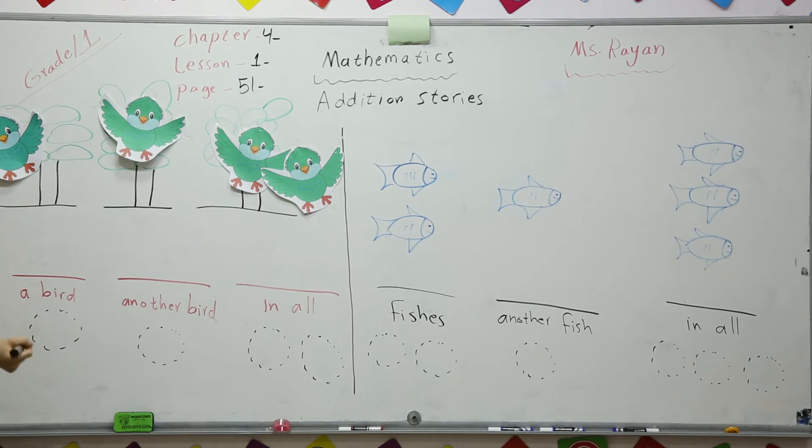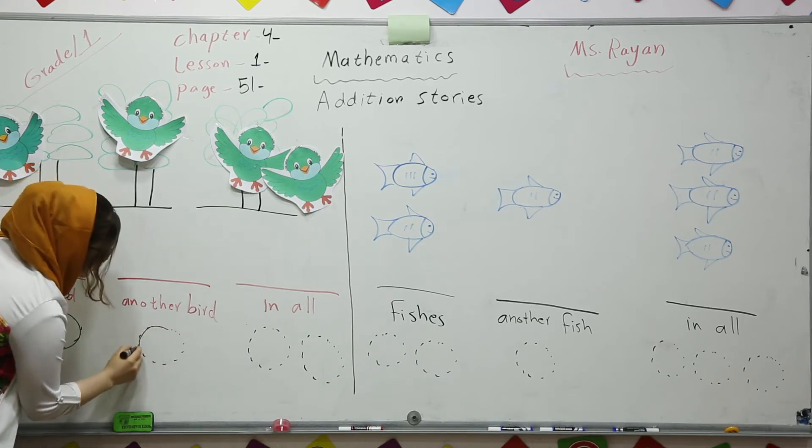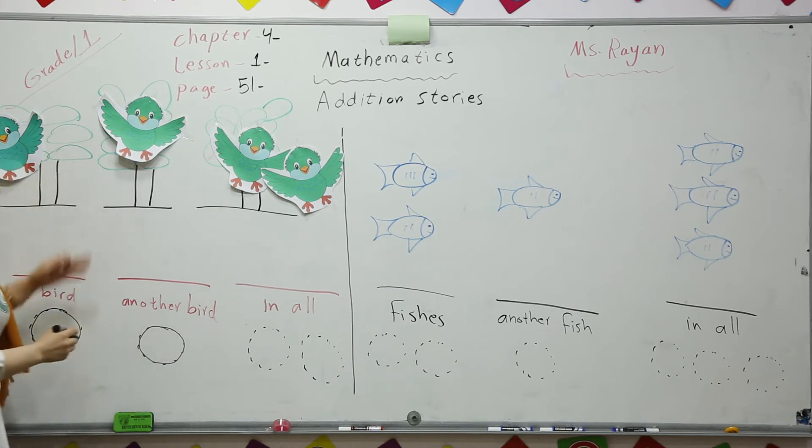So let's make it mathematically. How? This circle is for a bird, this bird alone, and this circle is for another bird.